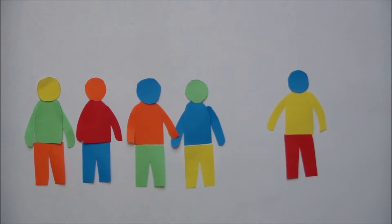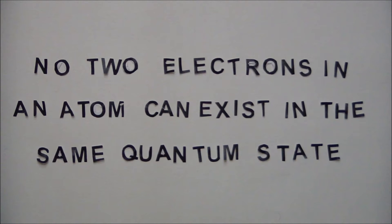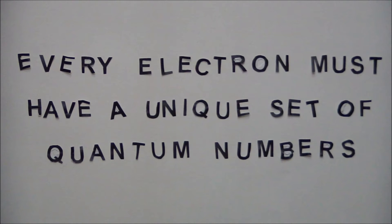The answer is the exclusion principle, a theory formulated by Austrian physicist Wolfgang Pauli in 1925. It states that no two electrons in an atom can exist in the same quantum state. That is, every electron must have a unique set of quantum numbers.